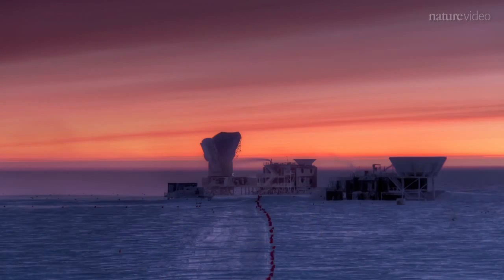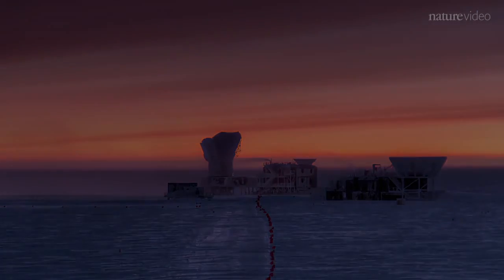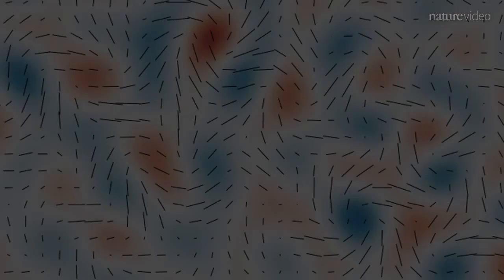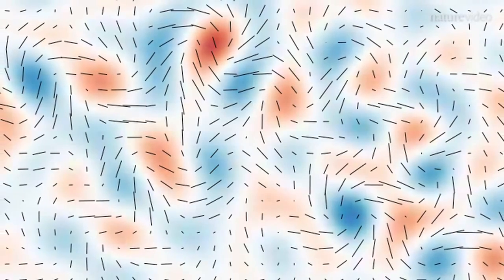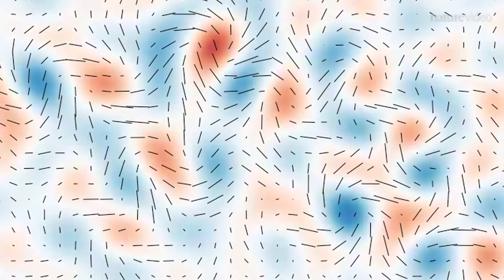Nine years of painstaking search and analysis later, and they've found something. Swirling patterns in the cosmic microwave background, created, they say, by gravitational waves from the beginning of the universe.